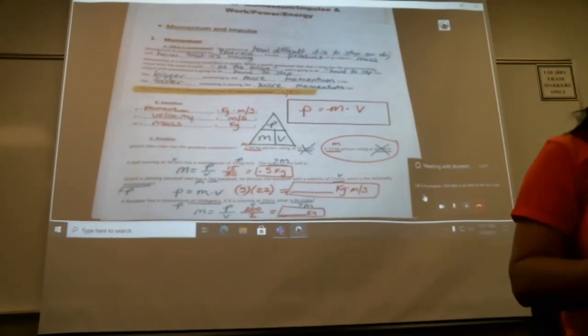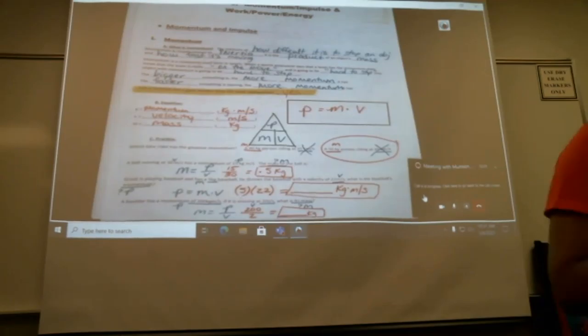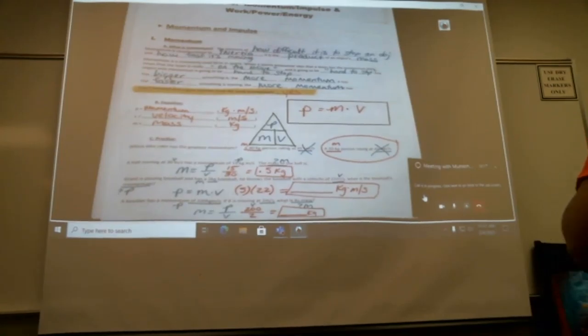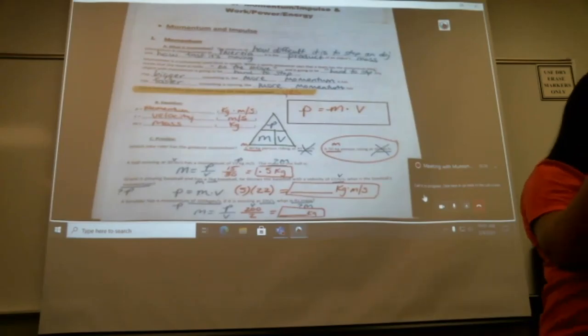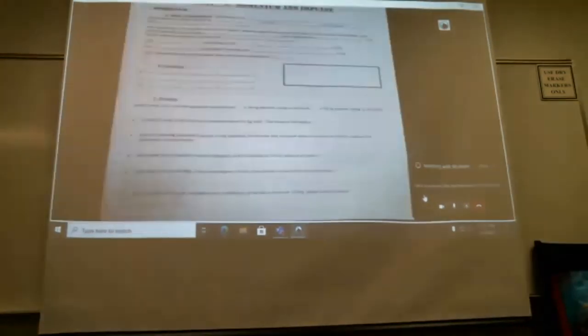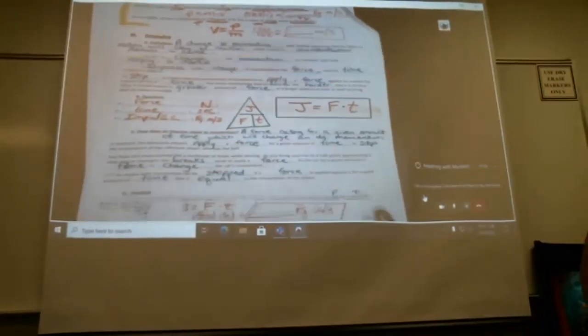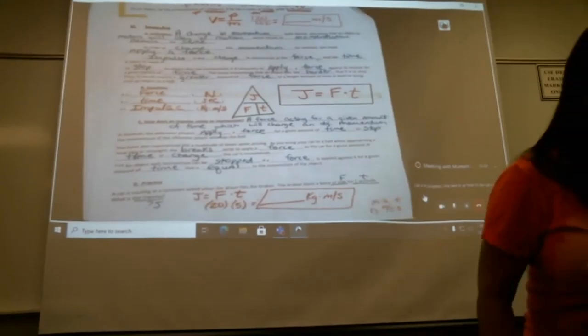So on page one, you should be able to spit this out. The definition for momentum is how difficult it is to stop an object. The SI unit for momentum is kilograms times meters per second. The variable for momentum is a lowercase p, not capital momentum. The more mass it has, the more momentum. The more velocity it has, the more momentum. If my object's not moving, then my object has zero momentum. And we don't need to memorize the formula, that's what we need to memorize - those five, six things.